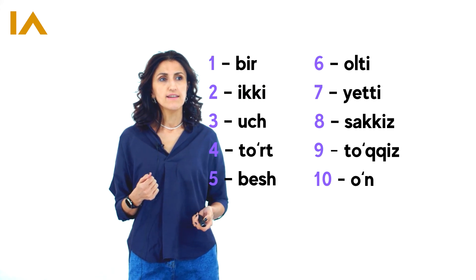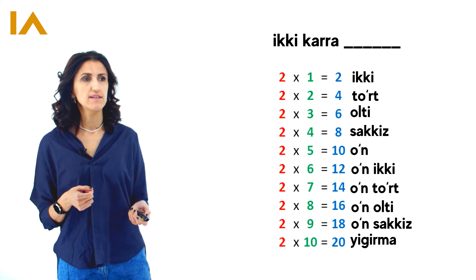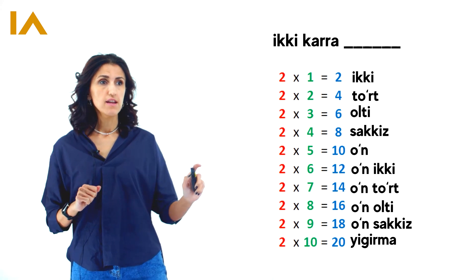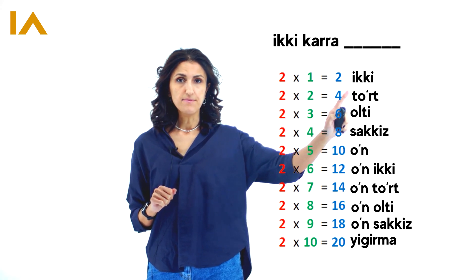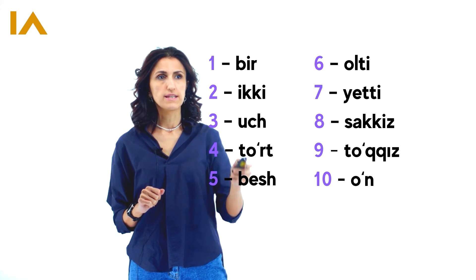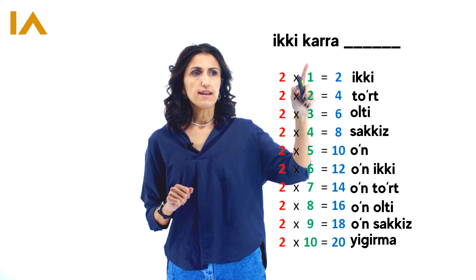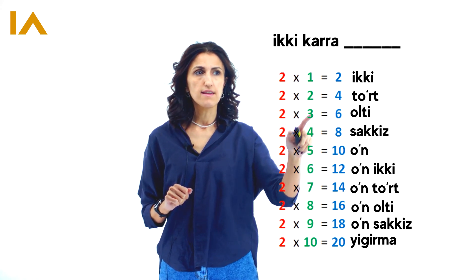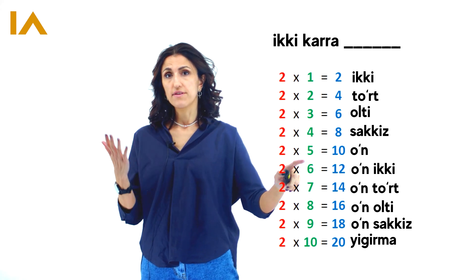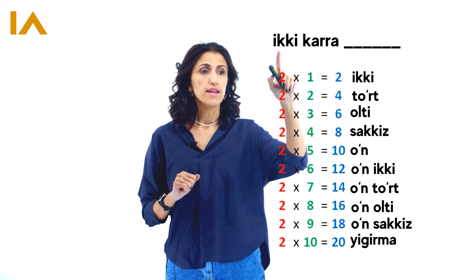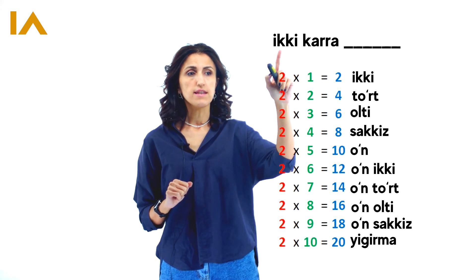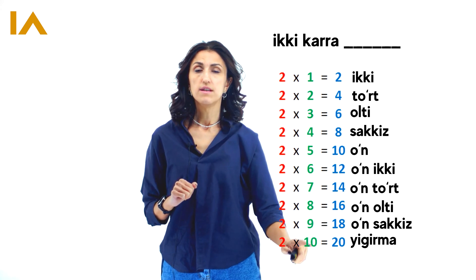Okay, let's see the next table — and this is how we can practice one more time. Sorry, I'm rushing. Iki karra iki, tor. Here are the numbers from one to ten. Iki karra bir, iki. Iki karra iki, tor. Iki karra üç, altı. Iki karra beş, on. Read it with me. Iki karra altı, on iki. Iki karra yeti, on tor. Iki karra sakkiz, on altı. Iki karra toqqız, on sakkiz. Iki karra on, yirmi.